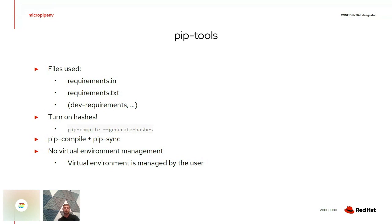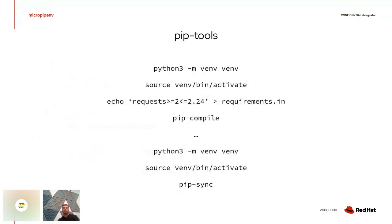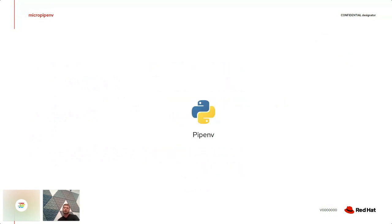Pip-tools does not manage any virtual environment, so you need to do that on your own. The workflow looks like this: create a virtual environment, activate it, install dependencies, and commit requirements.in and requirements.txt. Then a co-worker can pull changes, create their own virtual environment, and run 'pip sync' to install the same dependencies. This is quite verbose, and that gave birth to another tool called pipenv.